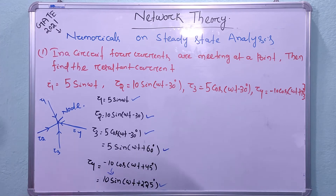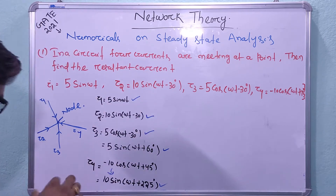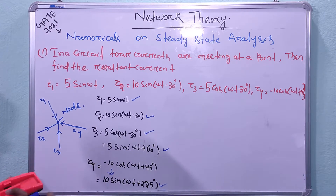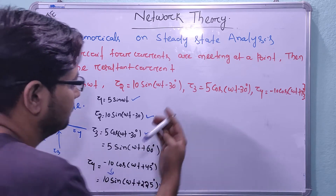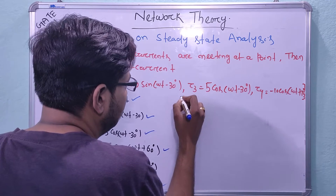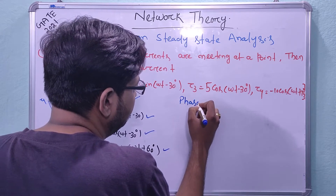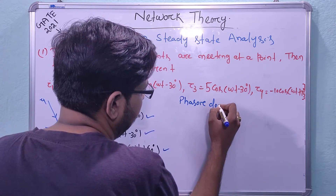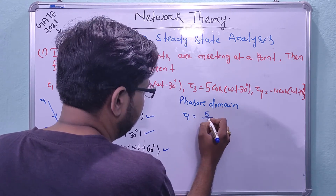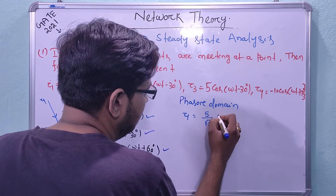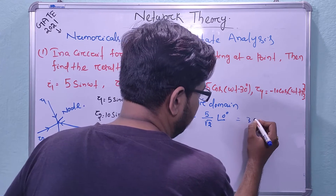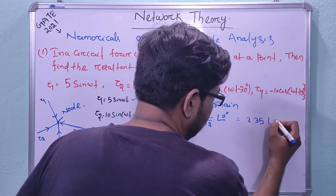Now let us convert these time domain currents to the phasor domain. In the phasor domain: i1 = 5/√2 at an angle 0°, which equals 3.35 at an angle 0°.